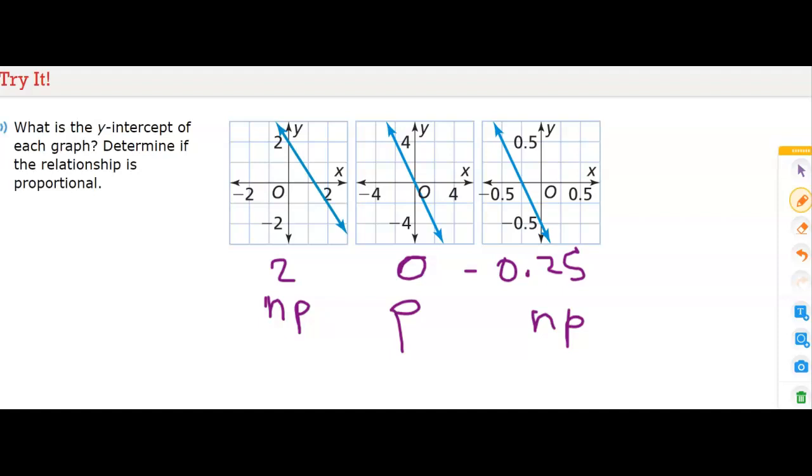I looked at this one again and that's not the y, this is the y. That's what I get for rushing. It's negative 0.5. We'll just correct that so we're all on the same page, and it's still not proportional anyway.